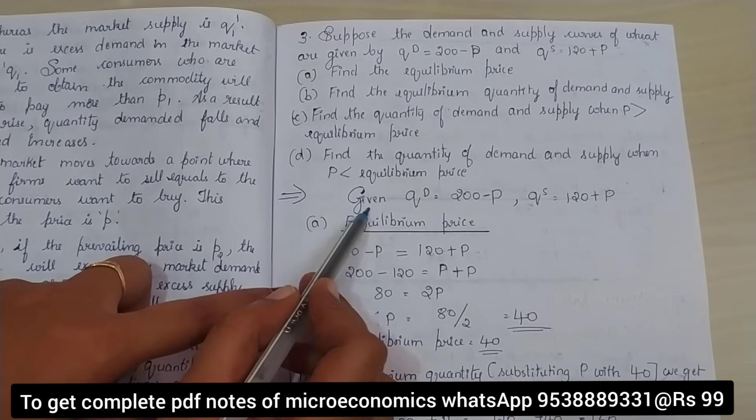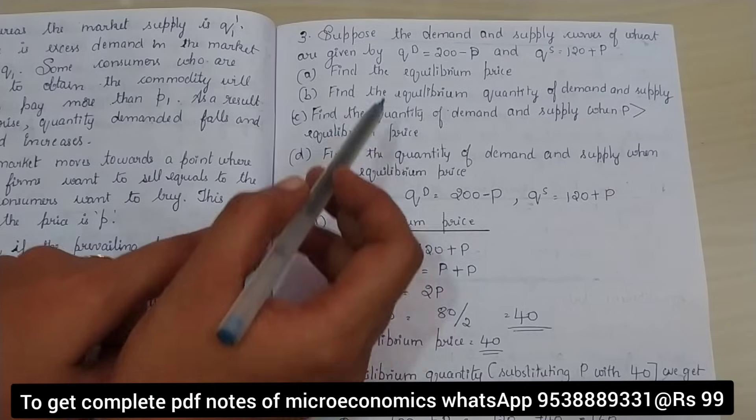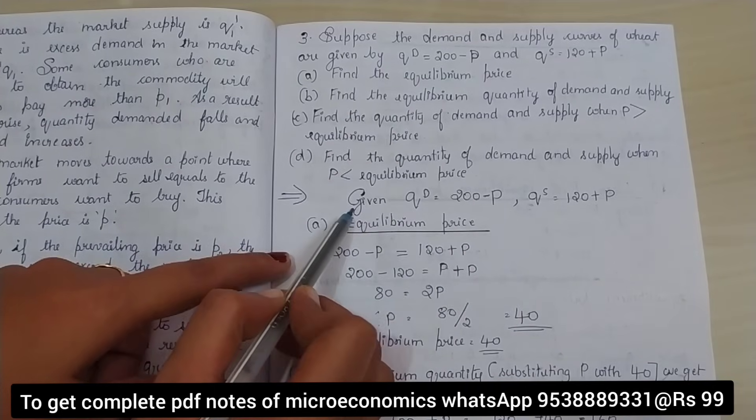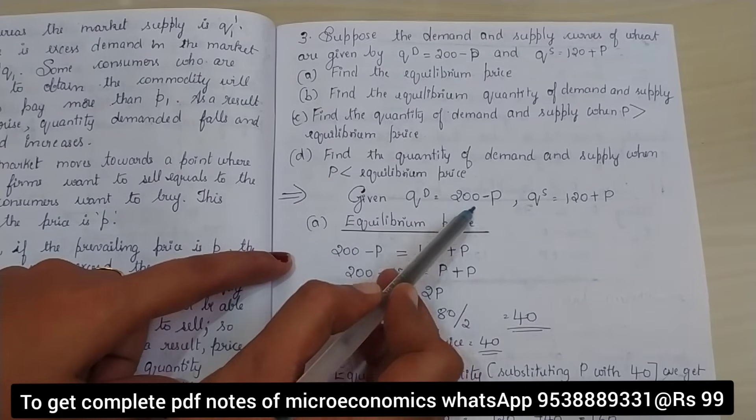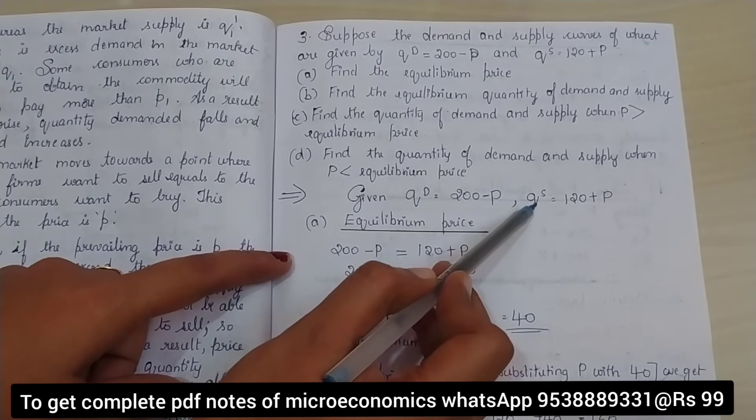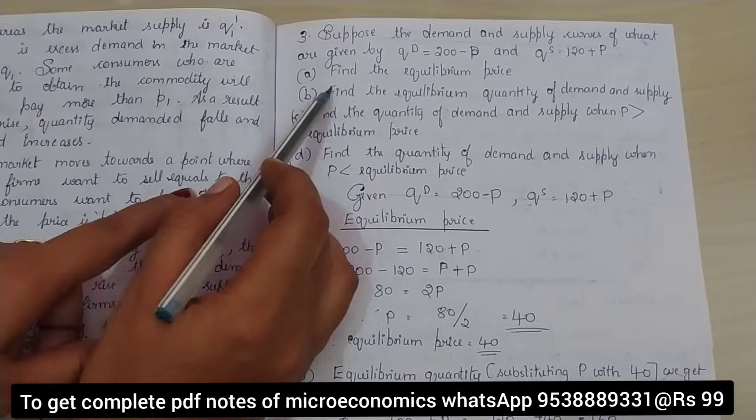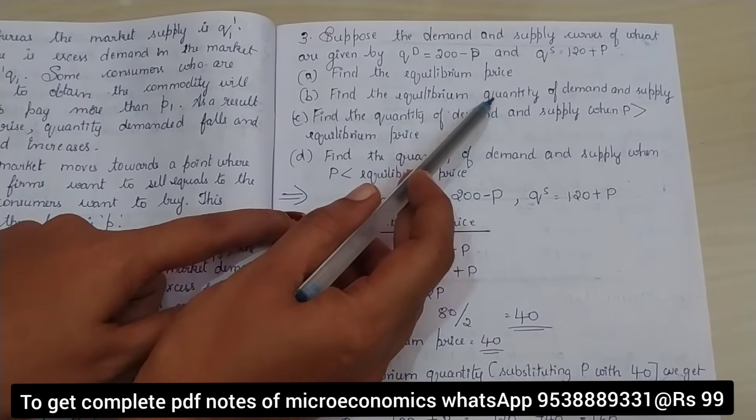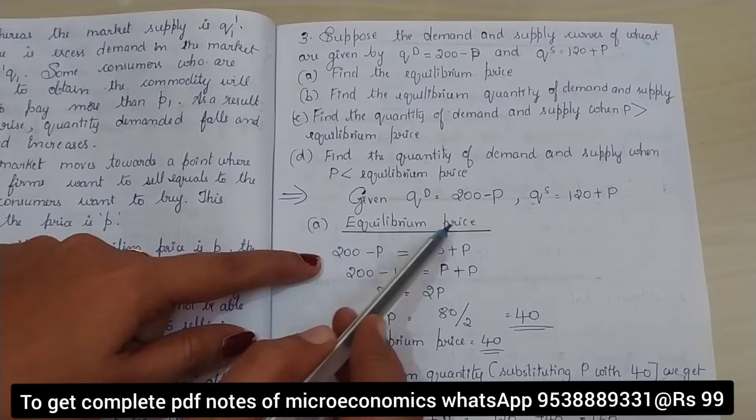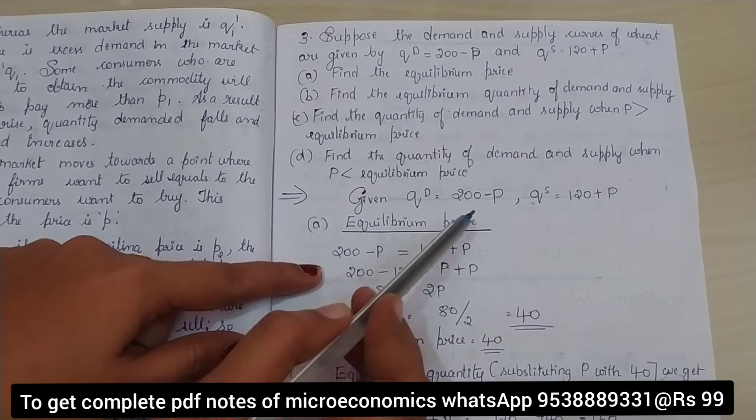First of all, how to solve this? We have to write what is given in the question. So we write given: QD is equal to 200 minus P, and QS is equal to 120 plus P. First, we have to find the equilibrium price.